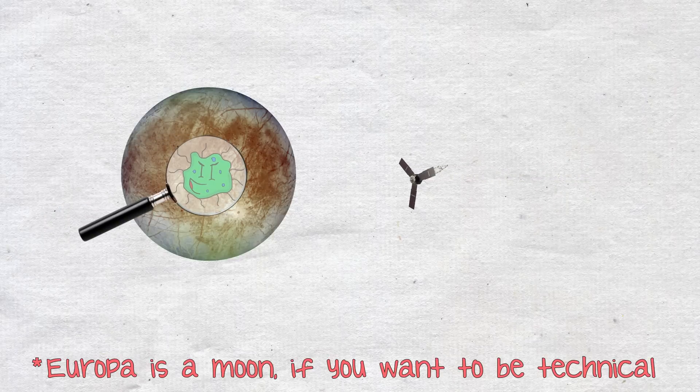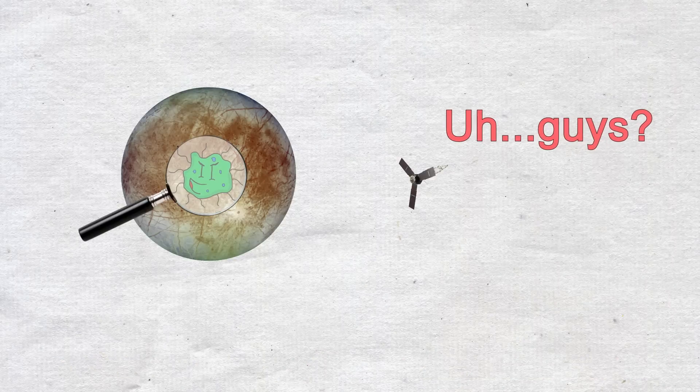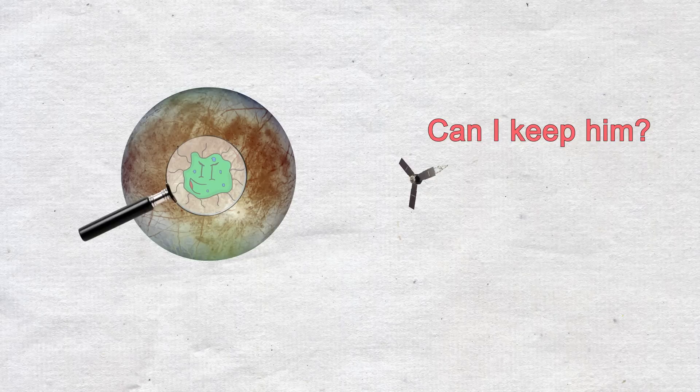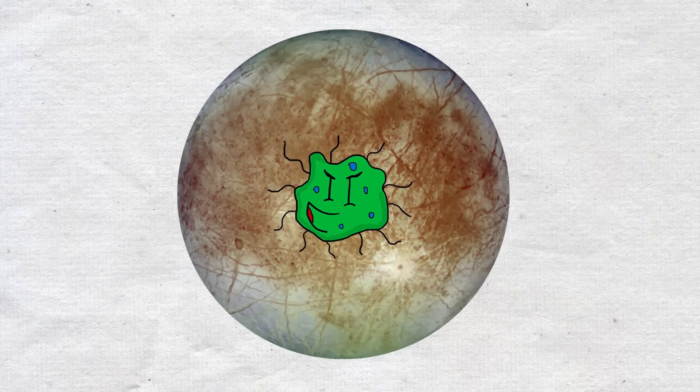In this scenario, we would be the billions of years more advanced alien species keeping an eye on new life in the universe, something that many people have suspected extraterrestrials have been doing to us over the history of life on earth. But what would we do about it? To what extent would we interfere with the growth of a new presence in the universe?